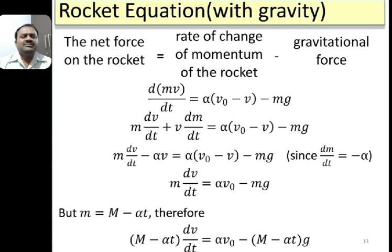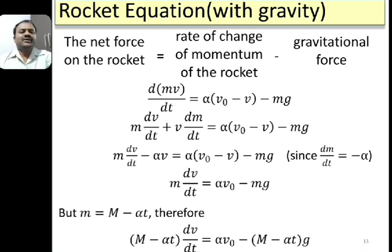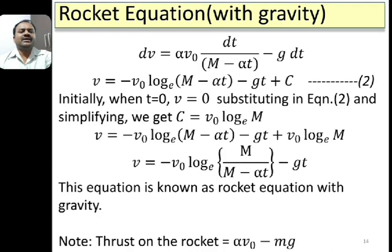Writing m = M − alpha×t, we get (M − alpha×t) × dv/dt = alpha×v0 − (M − alpha×t)×g. Dividing through, dv = alpha×v0 × dt/(M − alpha×t) − g×dt. Integrating, we obtain v = −v0 × ln(M − alpha×t) − g×t + constant C.